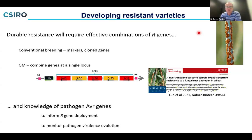But what I mainly want to talk about today is the other side of the coin: to deploy effective resistance we really need to understand what's happening in the pathogen — what are the avirulence genes present, what are the corresponding effectors that resistance genes recognise, and to develop tools to monitor the evolution of pathogen virulence.